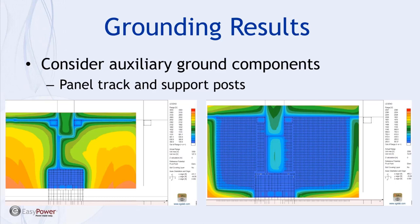On the right-hand side is the same model but with the support infrastructure for tracking posts or mounting hardware also included — steel posts driven into the earth, for example. Representing these can have a drastic impact on compliance results, as we can see from the right-hand plot where most of the red and orange have been replaced with compliant blue-type voltage calculations. The XGS Lab software can adequately represent the electrical characteristics of your steel mounting and tracking hardware, and this approach also extends to the facility fence line.